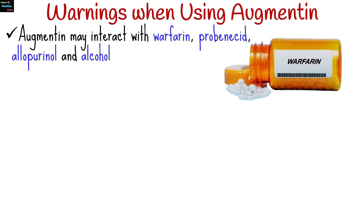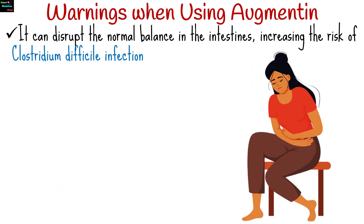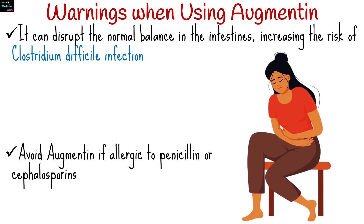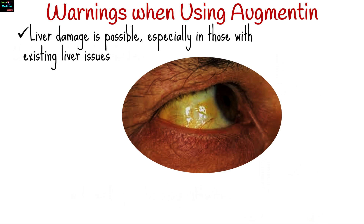When using Augmentin, there are several important warnings and precautions to be aware of. Inform your healthcare provider about all medications you're taking, as Augmentin may interact with certain drugs including warfarin, probenecid, allopurinol, and alcohol, affecting their effectiveness or causing side effects. Use Augmentin cautiously during pregnancy and breastfeeding. Augmentin use can disrupt the normal balance of bacteria in the intestines, increasing the risk of Clostridioides difficile infection; monitor for symptoms like persistent diarrhea and abdominal pain. Avoid Augmentin if allergic to penicillin or cephalosporins, and watch for rash, swelling, or breathing difficulties. Liver damage is possible, especially in those with existing liver issues; look out for signs like yellowing of skin, dark urine, or abdominal pain.